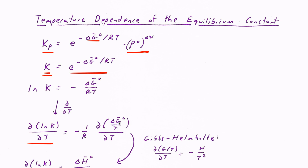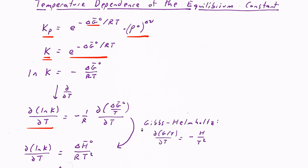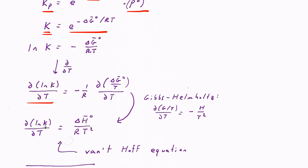I need to take the derivative of ΔG over T with respect to temperature — but that looks familiar. The Gibbs-Helmholtz expression tells us that the derivative of a Gibbs free energy over temperature with respect to temperature is always minus the enthalpy over T squared. So the right-hand side is minus 1 over R times minus ΔH over T squared. The result is: the change in ln K as temperature changes equals ΔH over RT squared.